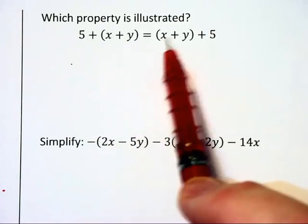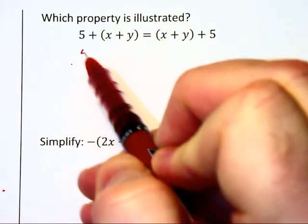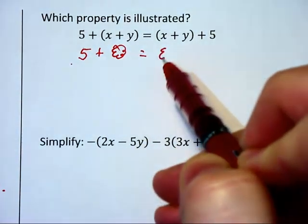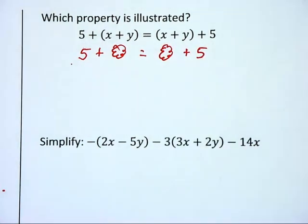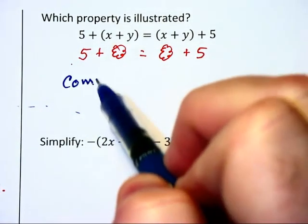We don't have 5, x, y in that order on the right. But if you think of this as 5 plus a grouping equals that same grouping plus 5, you can see they've moved or changed places. This actually represents the commutative property of addition.